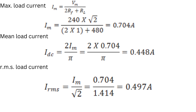Since two diodes are conducting at every instant, Im = 240√2 / (2×1 + 480), which gives 0.704 amperes. The mean or average load current Idc = 2Im / π, therefore 2 × 0.704 / π equals 0.448 amperes.